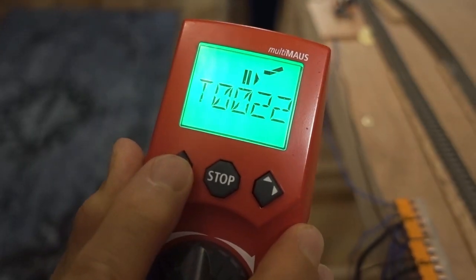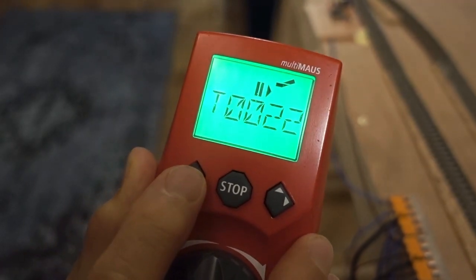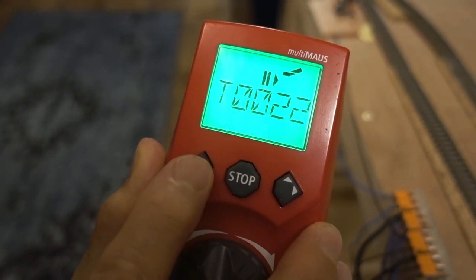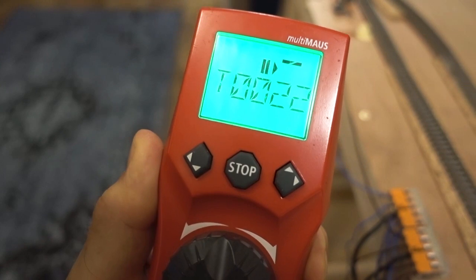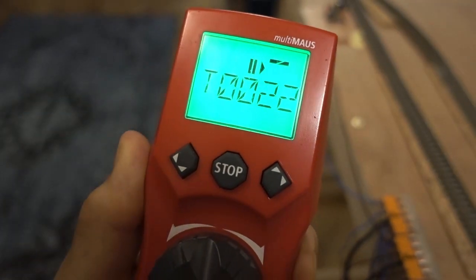And to return it to return to green, I set address 22 straight. And now the signal will return to green when the train has passed out of the block.